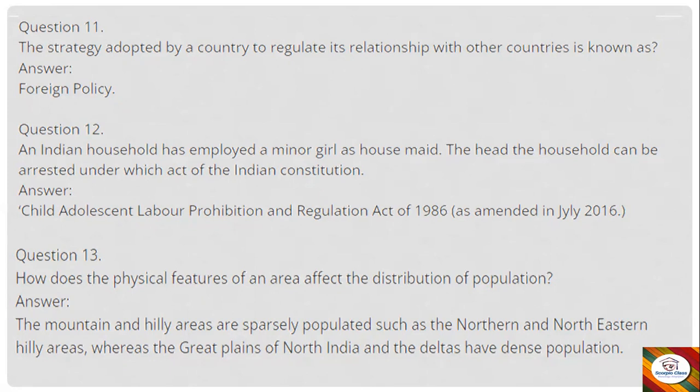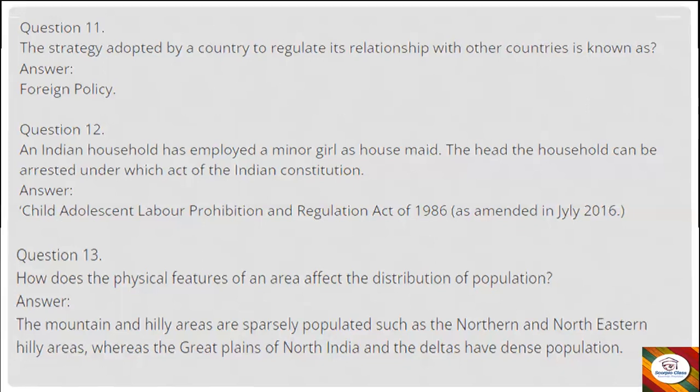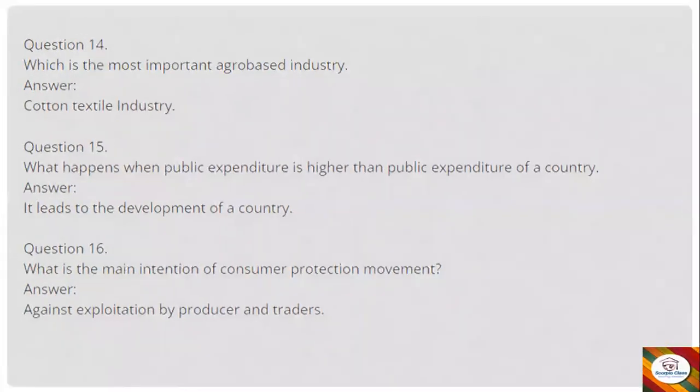Question 13: How do the physical features of an area affect the distribution of population? Answer: Mountain and hilly areas are sparsely populated, such as the northern and northeastern hilly areas, whereas the great plains of North India and the deltas have dense population.